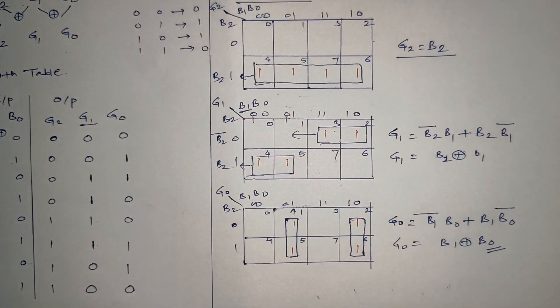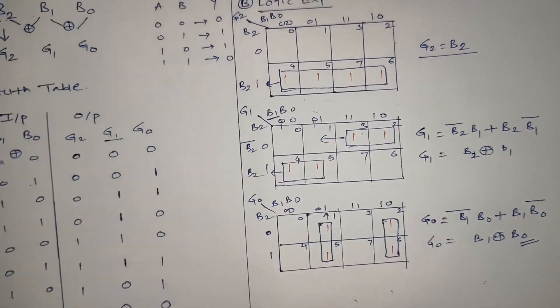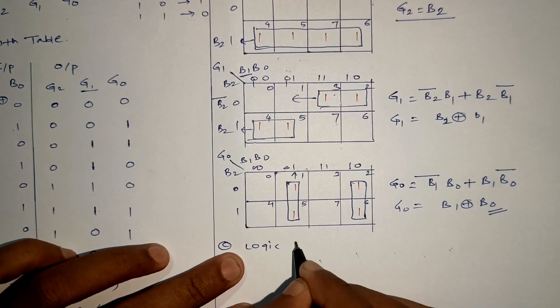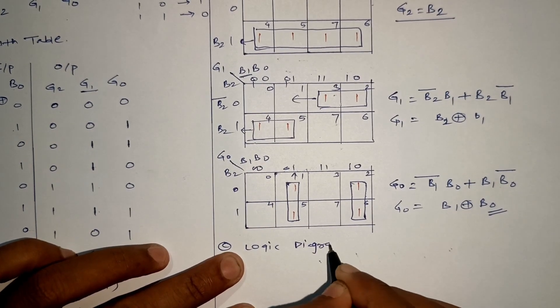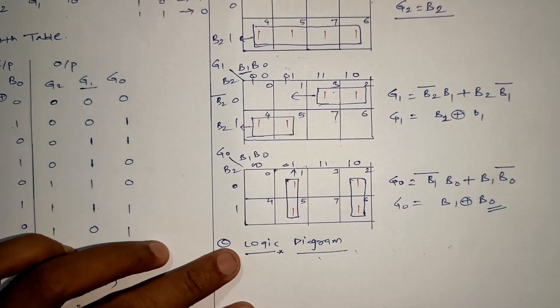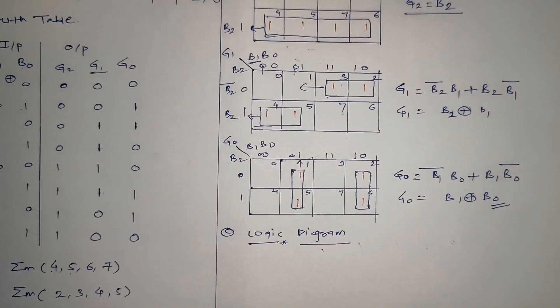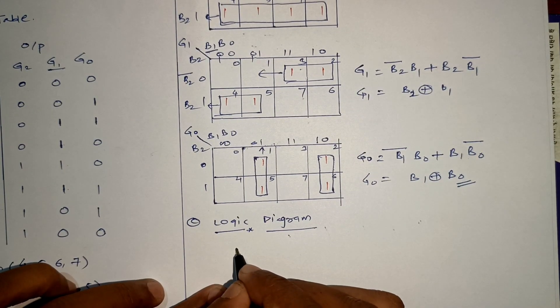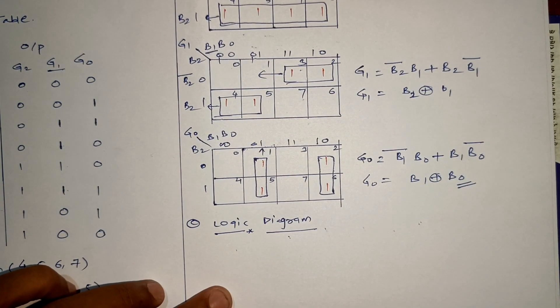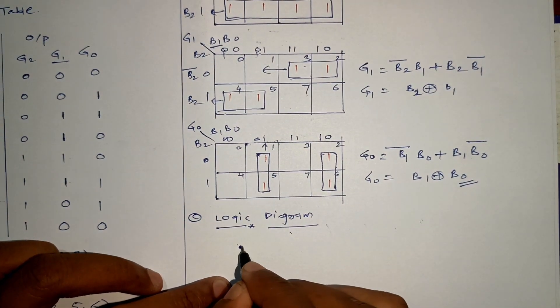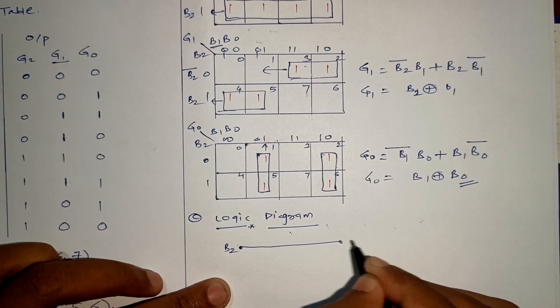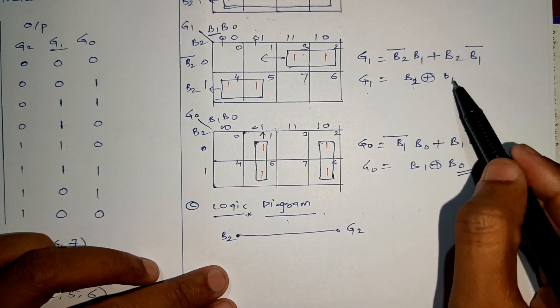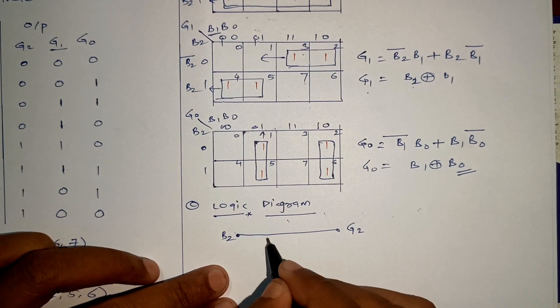The last step will be our logic diagram. Whenever we are designing any combinational or sequential circuit, we have to end up with a logic diagram. First term is G2 equals B2, so we can take G2 equals B2 as it is. Next, G1 equals B2 XOR with B1, so I will be taking B2 from here across an XOR gate, and the second input will go to G1.